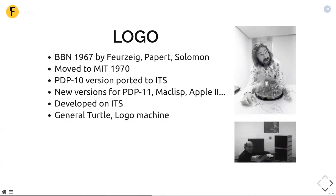A little bit more about the Logo programming language. It was created first at the BBN company in the same city as MIT, but early on it moved to MIT. The implementation was ported to ITS and later to the smaller PDP-11 machine. They wrote many versions — one implemented in MacLisp, and they made a version for the Apple II which became quite popular. It's quite famous for the turtle, a small semi-spherical robot device that draws lines on the floor. They also made a special Logo machine to run Logo, which they tried to sell to schools.